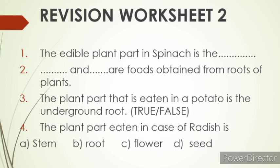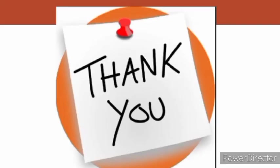Number four is: the plant part eaten in the case of radishes — there are four options. Option A is stem, B is root, C is flower, and D is seed. You have to pick the correct answer. Okay, thank you children.